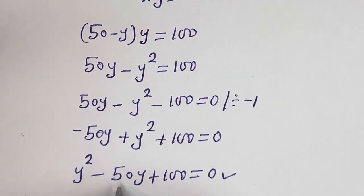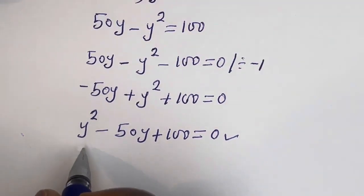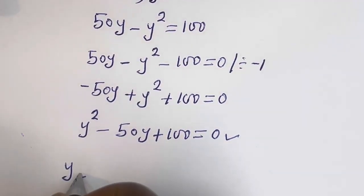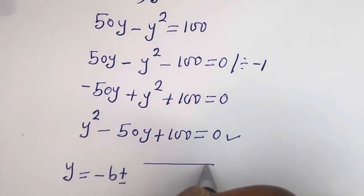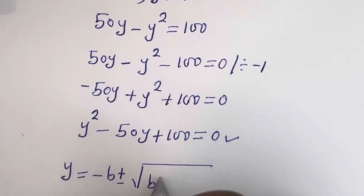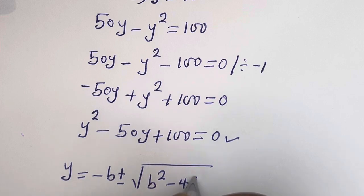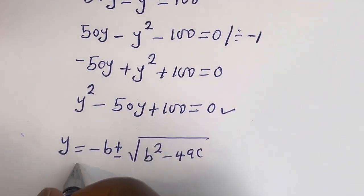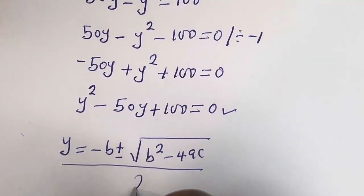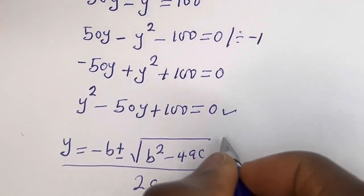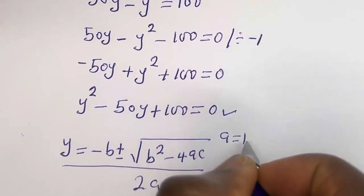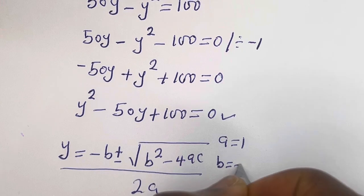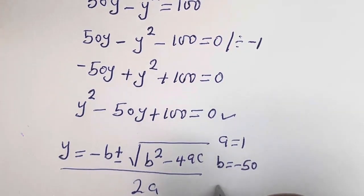Let's solve this using the quadratic general formula: y is equal to minus b plus or minus square root of b squared minus 4ac, over 2a. From this equation, a is equal to 1, b is equal to minus 50, c is equal to 100.